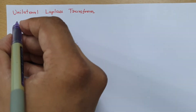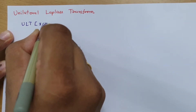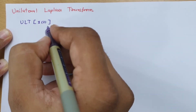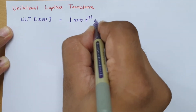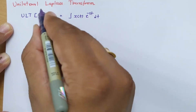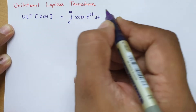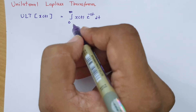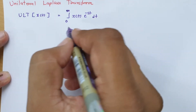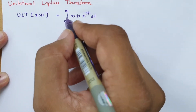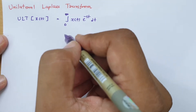When we talk about the unilateral Laplace transform, there is a little difference between the Laplace transform and the unilateral Laplace transform. In the Laplace transform, we take limits from minus infinity to plus infinity, but in the unilateral Laplace transform, time varies from 0 to infinity. This is the basic difference between the two.